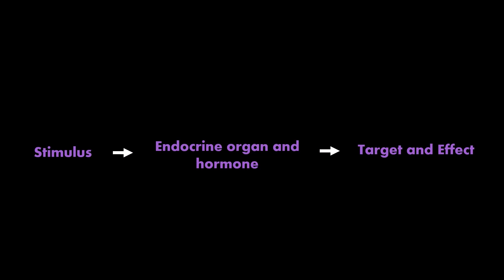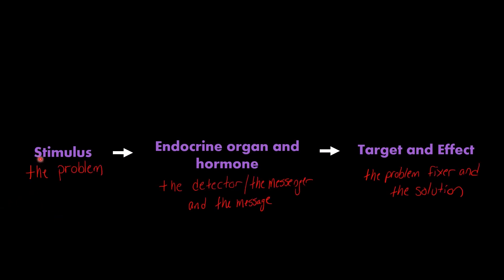Now you're going to use the basic pattern of hormone function to add in all of the details. Any hormone is going to follow this basic pattern. You can think of the stimulus — that's how we know there is a problem that needs to be fixed. That stimulus is detected by the endocrine organ, which is like the detector. It detects a problem and sends the message. The hormone itself is the message, released into the bloodstream. It travels all over the body until it reaches the cells that can respond to it — cells that have a receptor. That's the target — the message receiver and problem fixer. And the effect is the solution to the problem.